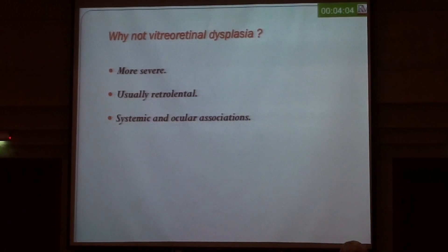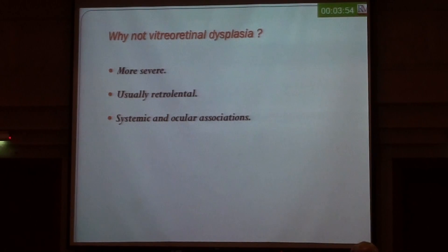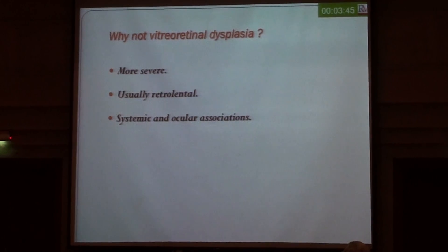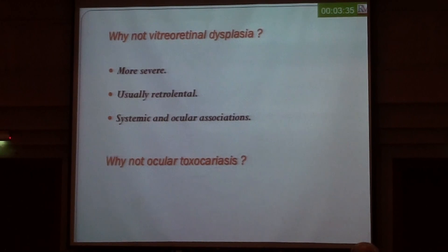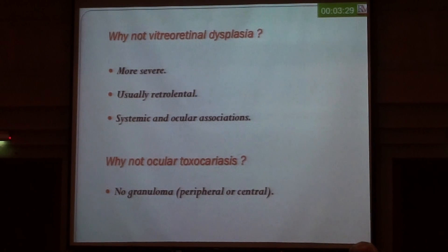The other mentioned choices are less likely in this case. Retinal dysplasia tends to be more severe — the retina is not developed and looks like an undifferentiated whitish mass anteriorly at the vitreous space — and it has systemic and ocular associations such as skin lesions and microphthalmia. Ocular toxocariasis has retinal traction but usually presents with an obvious granuloma, preferably with dragging centrally, which is not present in this case.